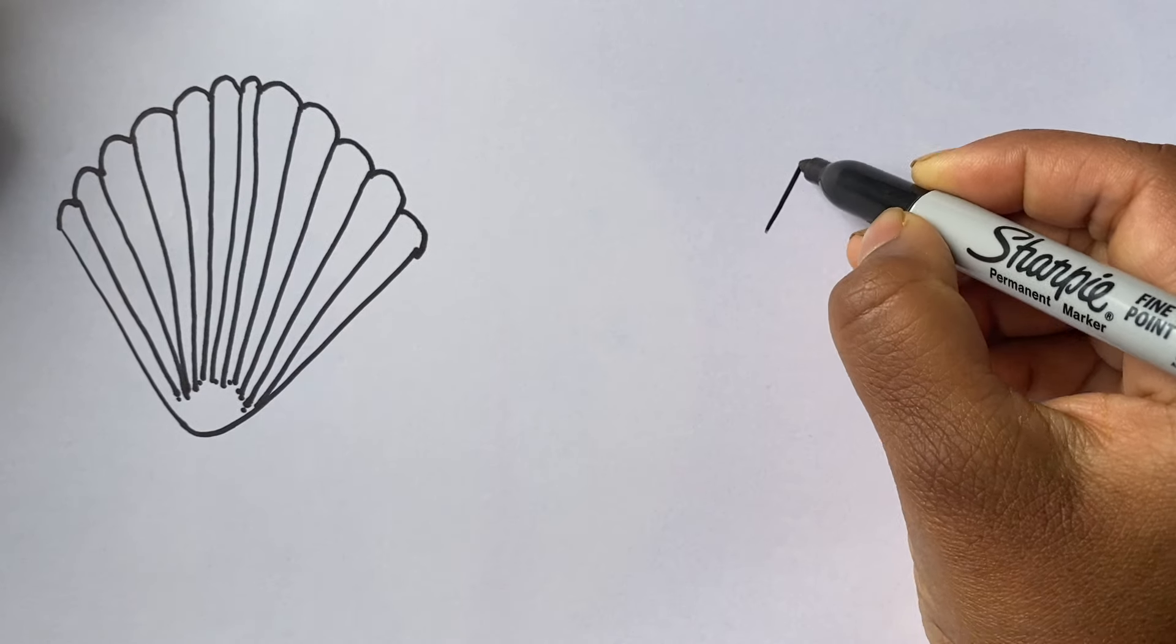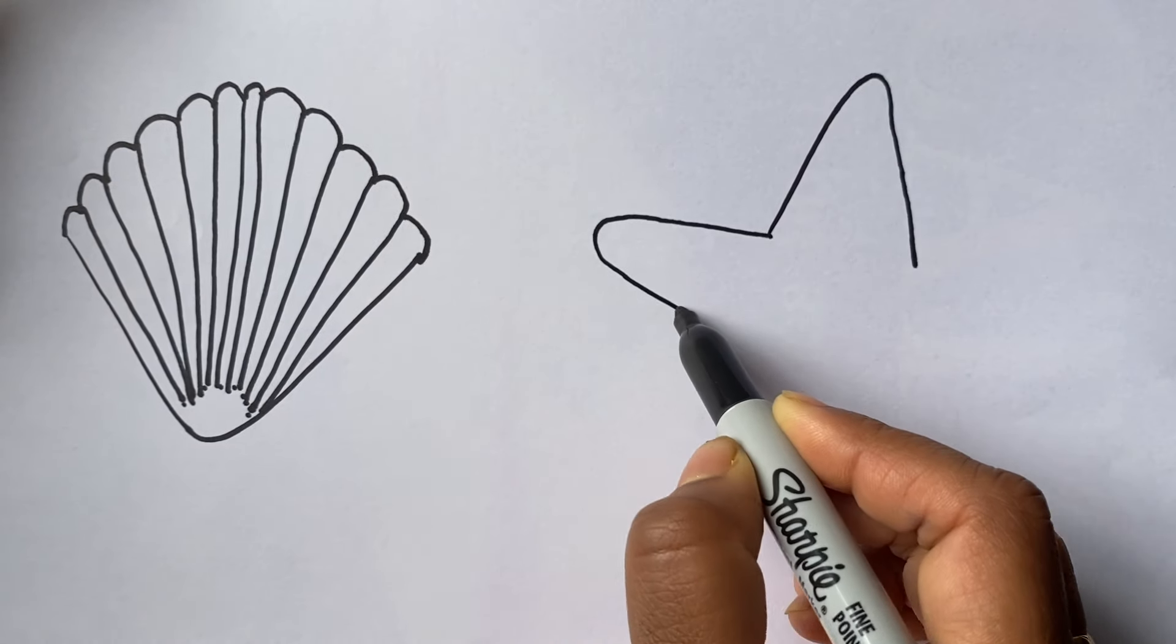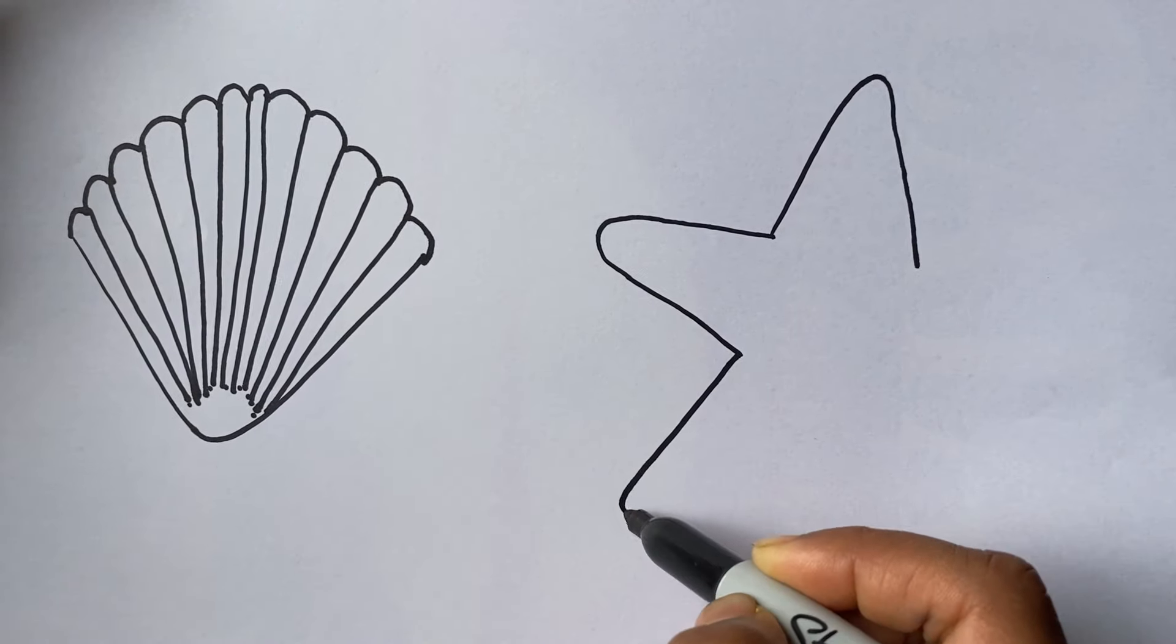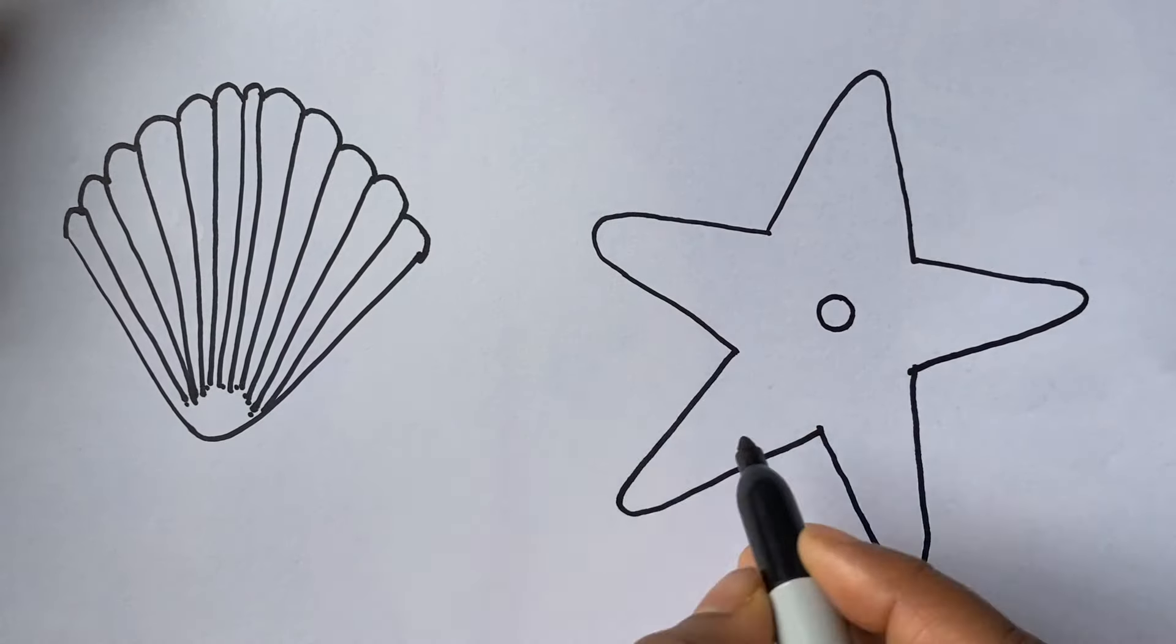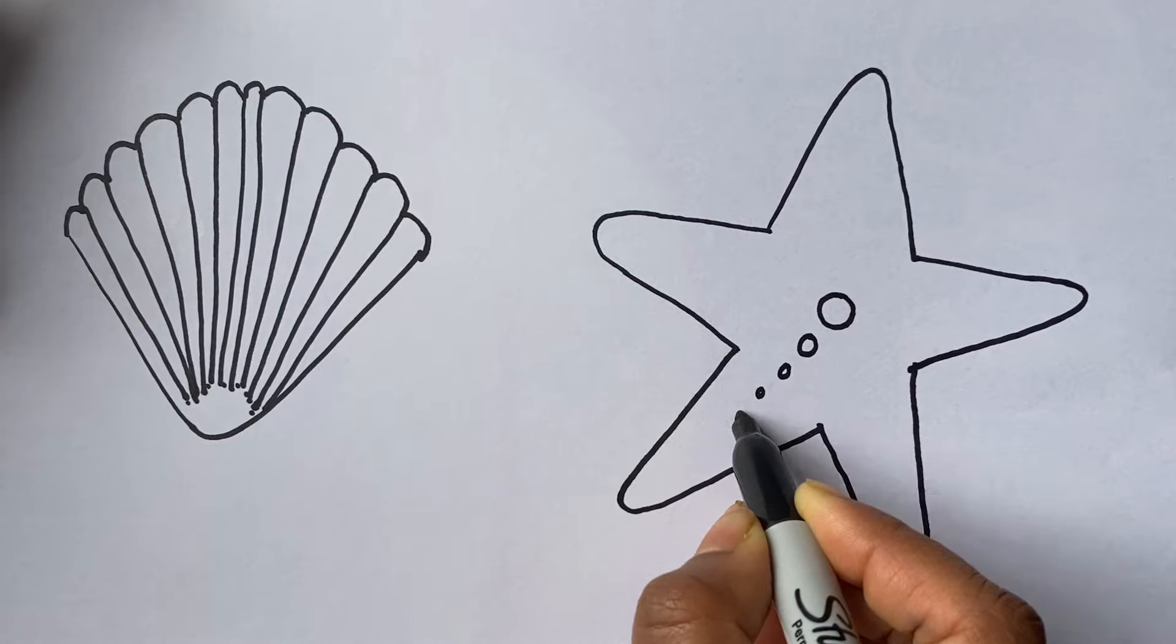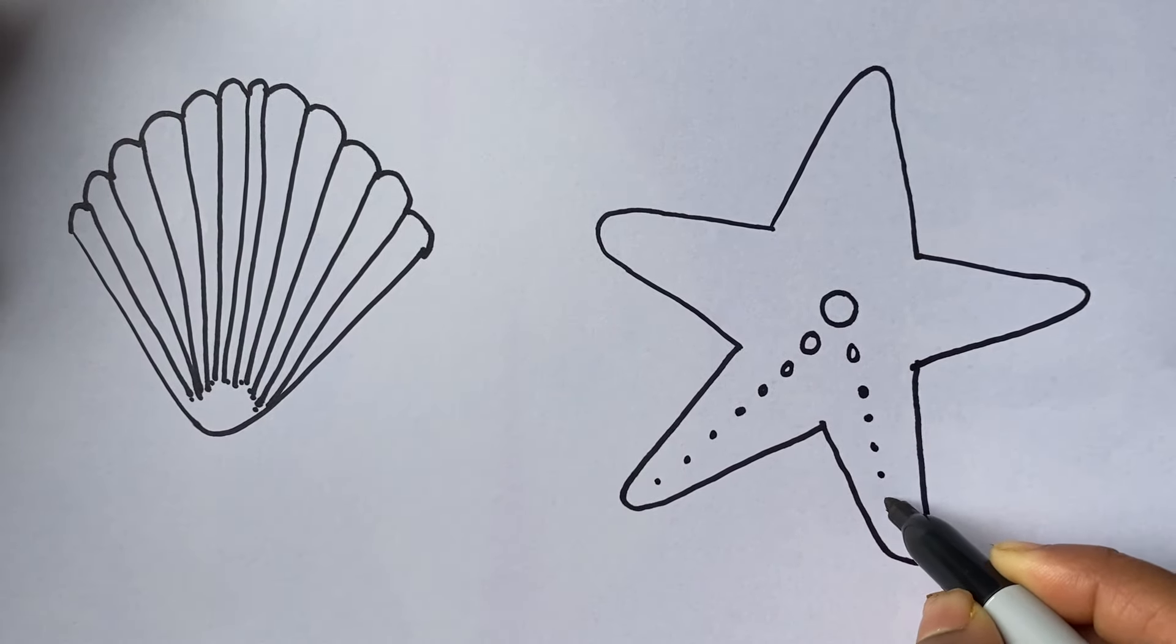Now starfish. Arms, central disc, ampoule. Starfish don't have blood and brain.